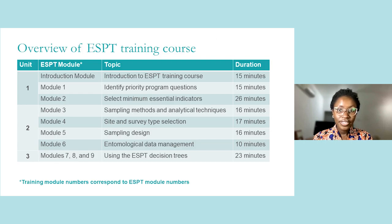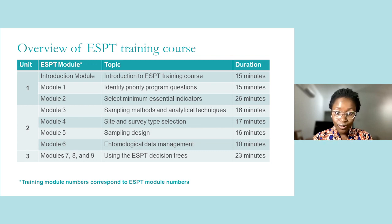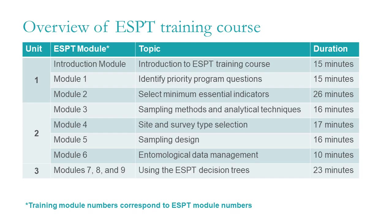Here is an overview of the ESPT training course. The training module numbers correspond to the module numbers in the ESPT, so Module 1 of the training covers Module 1 of the ESPT tool. This training course is made up of 11 total modules divided across three units. We estimate that roughly two and a half hours are needed to complete the full training course, but we encourage participants to go at the pace that best suits their needs and learning style, starting and stopping between modules as needed.